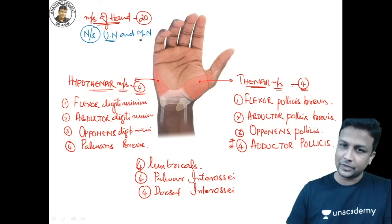Another important point: L1 and L2 (median nerve) are unipinnate muscles — originating from one tendon. L3 and L4 (ulnar nerve) are bipinnate muscles — originating from two adjacent tendons. This is another possible exam question. You can identify this directly from the diagram itself.